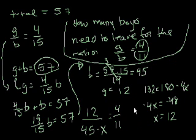There, we solved it. So we say that if 12 boys left the room, the new ratio of girls to boys would be 4 to 11. And does that make sense?